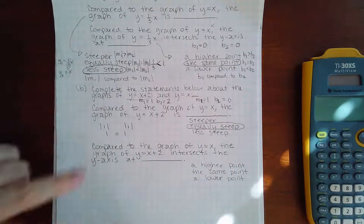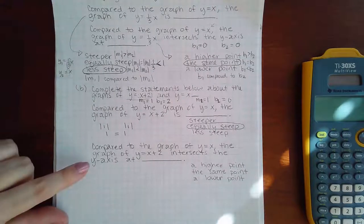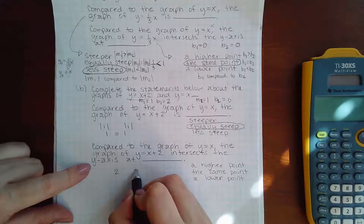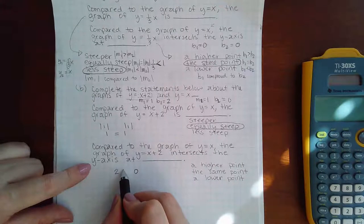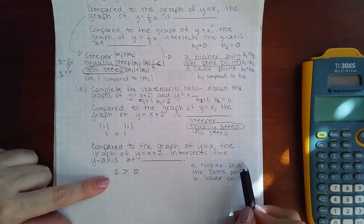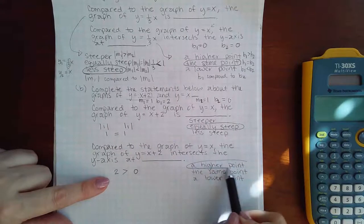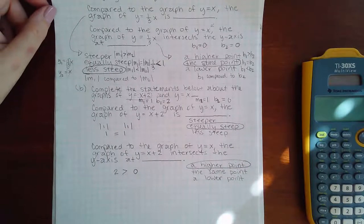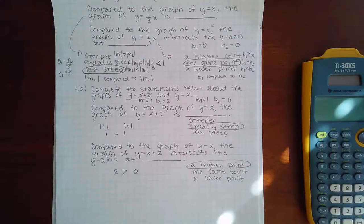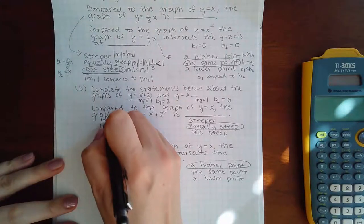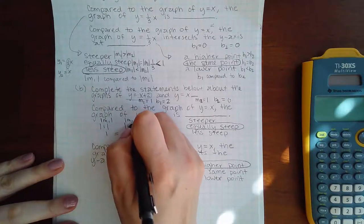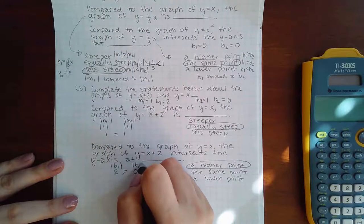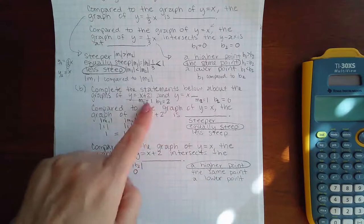Now for the intersections of the y-axis, here I have b1 which is two and b2 which is zero. What is the relationship? Two is greater than zero, which means I would have a y-intercept at a higher point than the graph of y equals x. So that one went a little bit smoother than the previous problem, just because we had already been introduced to everything and we had already labeled everything from the very beginning.